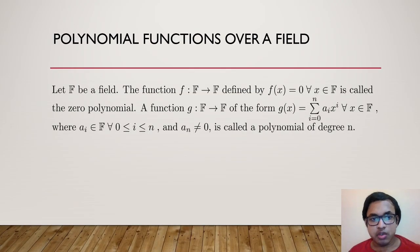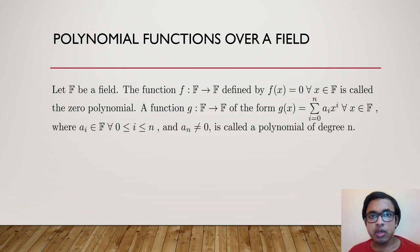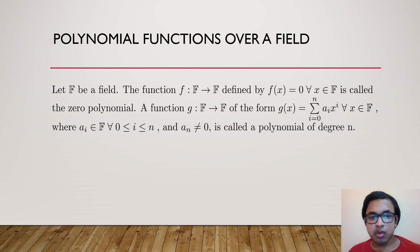Next, we have polynomial functions over a field. Let F be any arbitrary field. The function f: F→F defined by f(x) = 0 for all x in F is called the zero polynomial or the identically zero polynomial. A function g: F→F of the form g(x) = Σ aᵢxⁱ for i from 0 to n, where n ≥ 0, aᵢ ∈ F for all i, and aₙ ≠ 0, is called a polynomial of degree n. The zero polynomial has no defined degree.